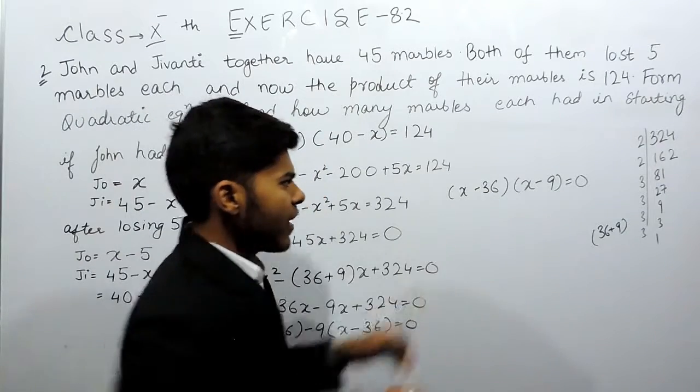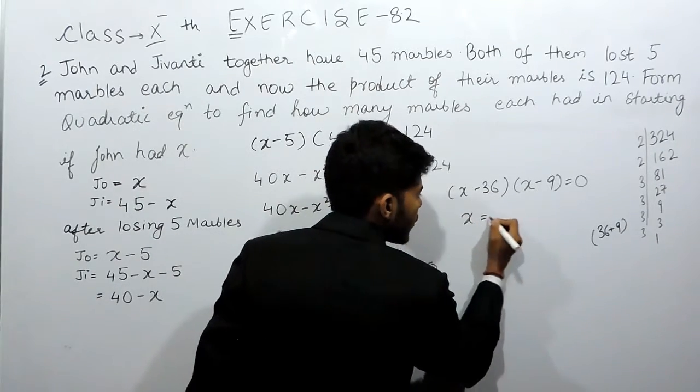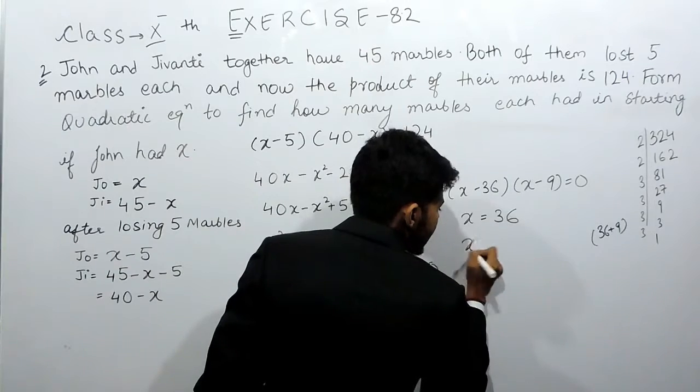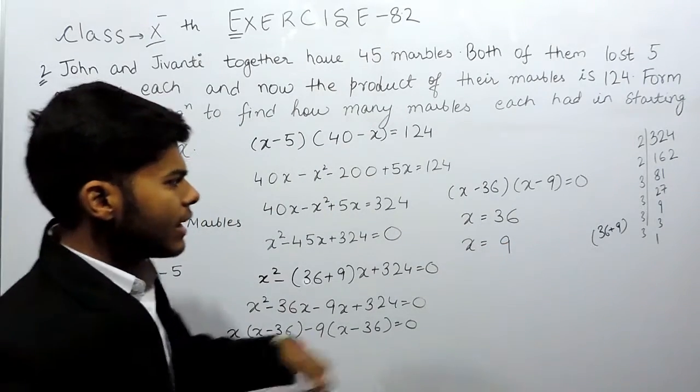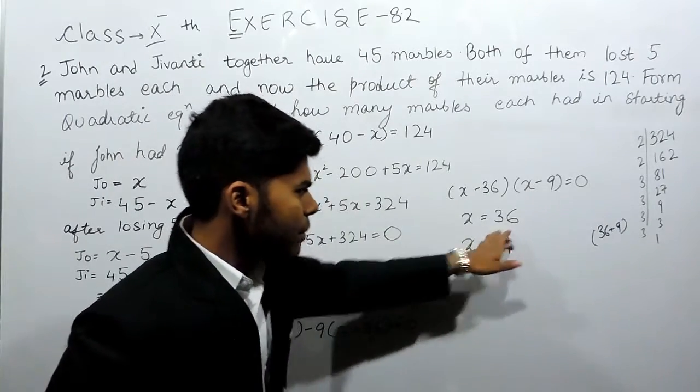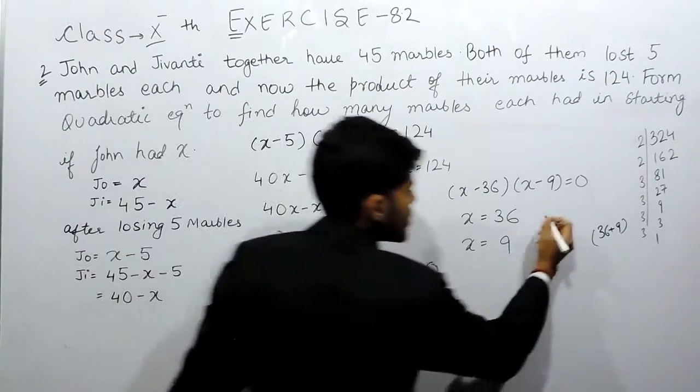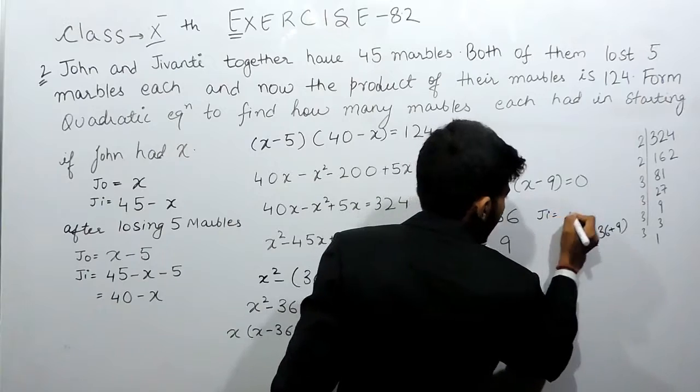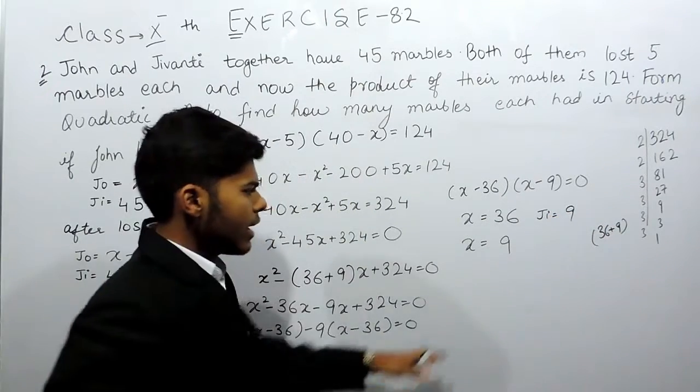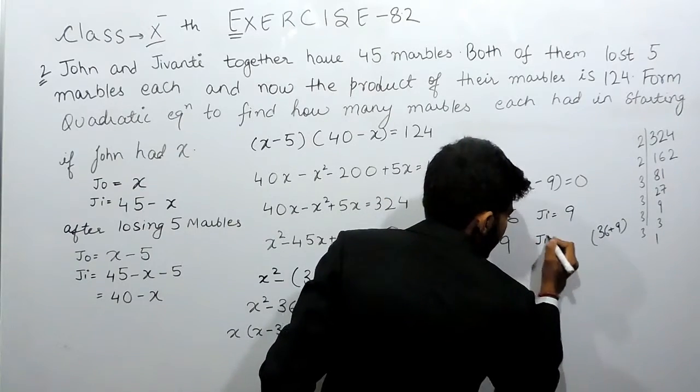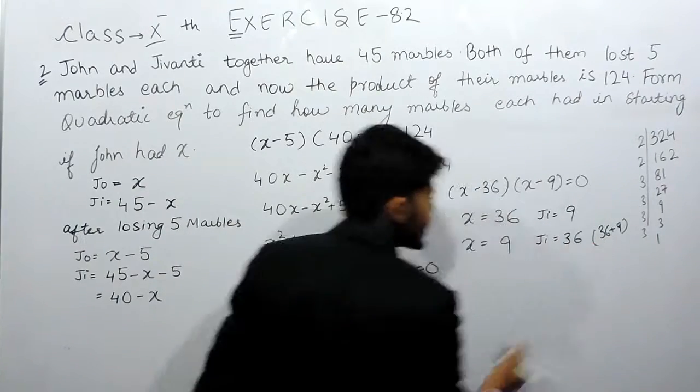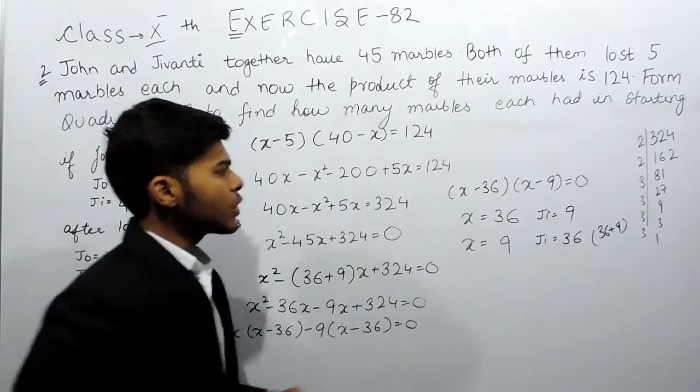There will be two values of x. This means that if John had 36 marbles, then Jivanti will have 9 marbles and if John had 9 marbles, then Jivanti will have 36 marbles. This is the solution to this question.